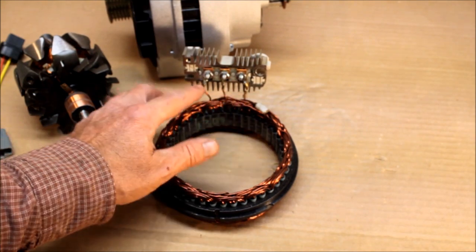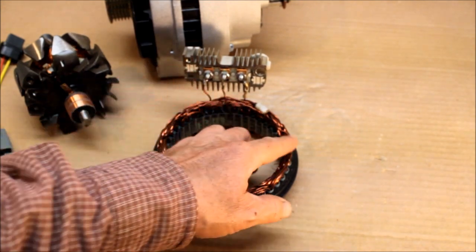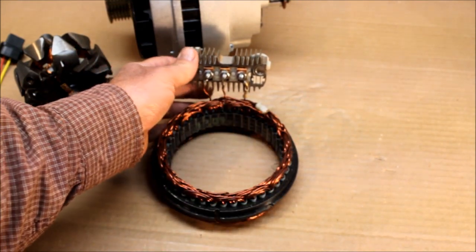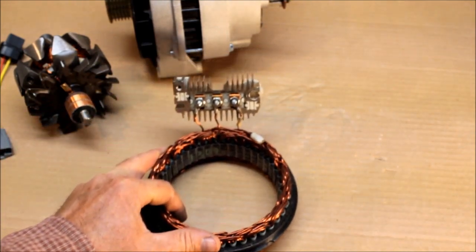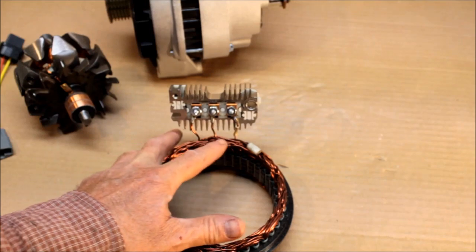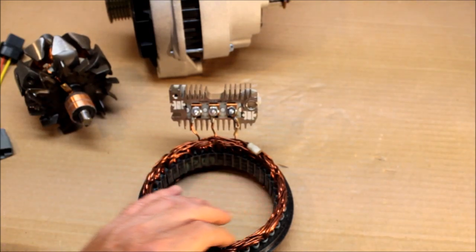This bridge rectifier right here is the conversion station that converts the AC current to DC current. When power is induced into the stator by the spinning of the rotor, this is all made in the form of AC or alternating current.